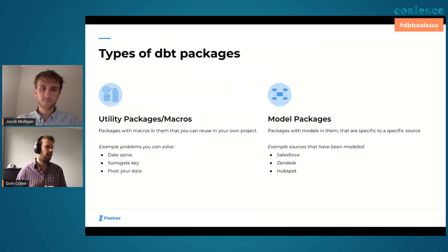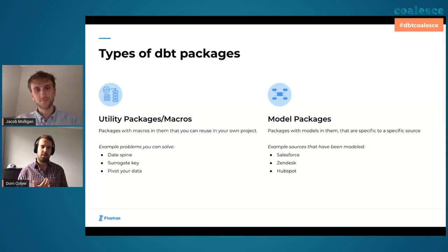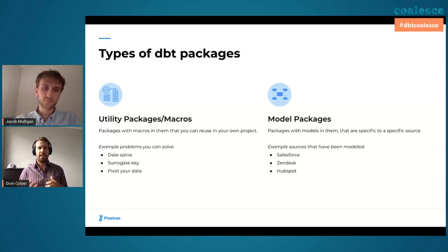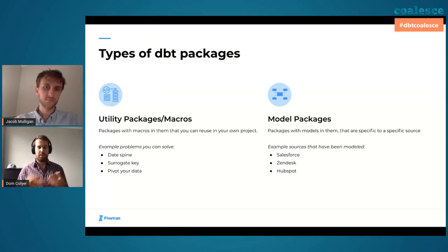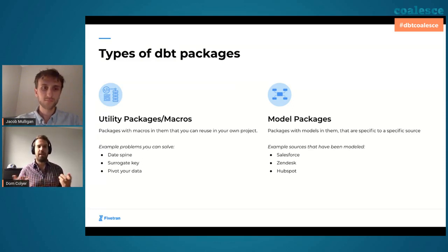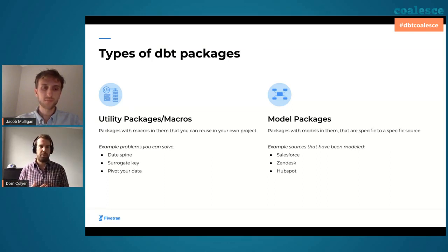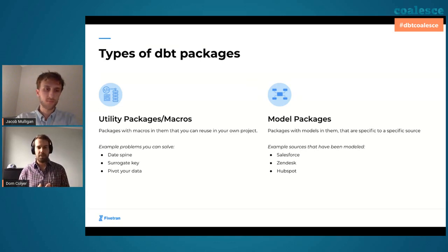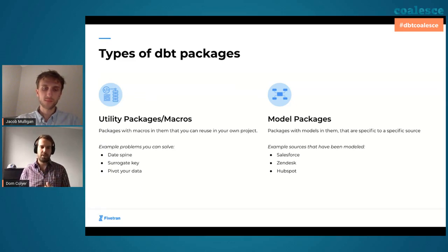We have two main types of DBT packages: utility packages that have macros, and model packages. Utility packages have macros — commonly used code blocks or functions that you don't have to rebuild all the time. A very popular one is dbt utils. I'm sure many of you have used it, and if you haven't, definitely check it out. Some other prevalent examples: data spine, a surrogate key package that does some hashing if you don't have any keys, and one to pivot out your data. They're quick, reusable libraries or utilities you can use inside your packages.